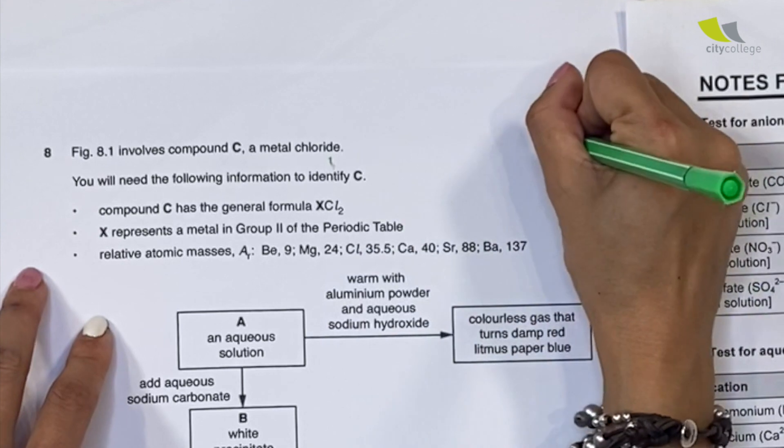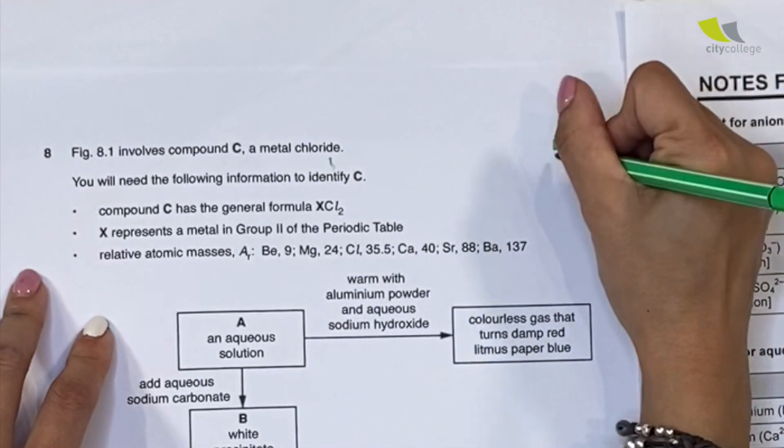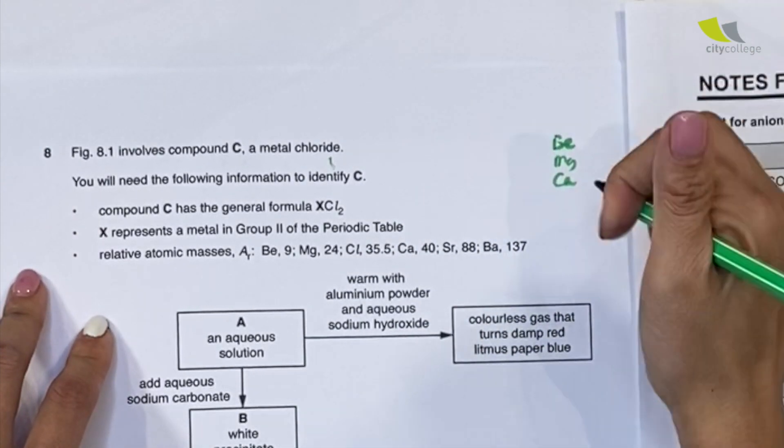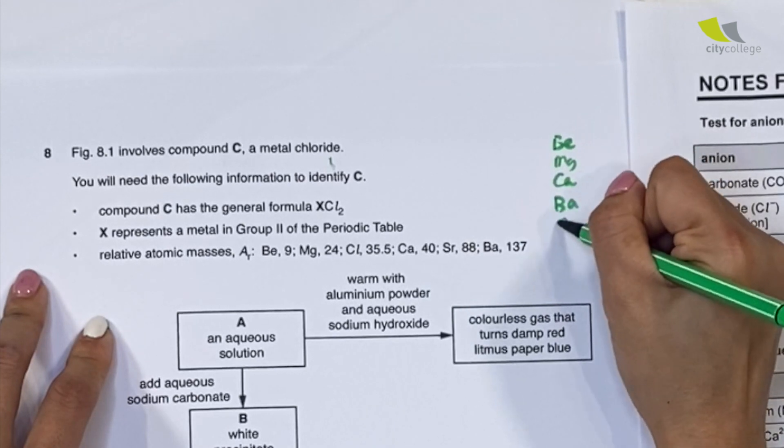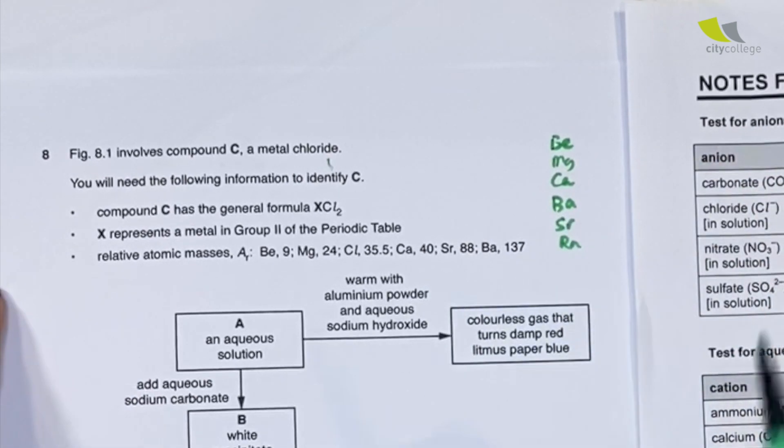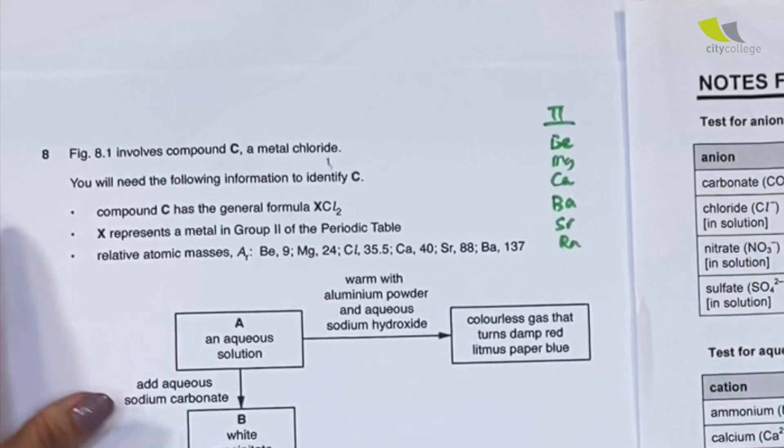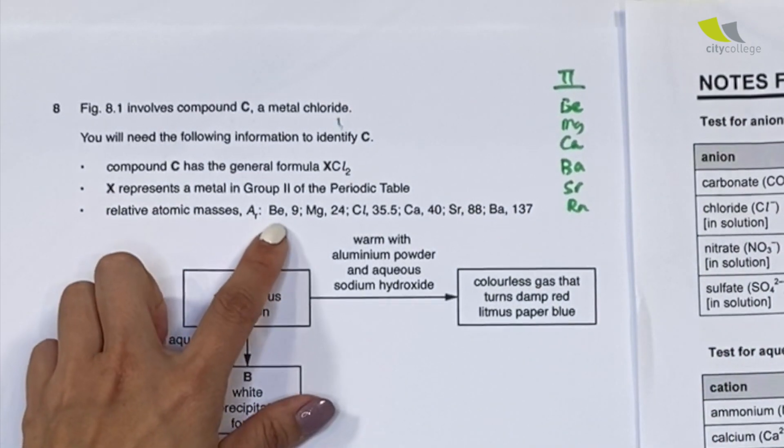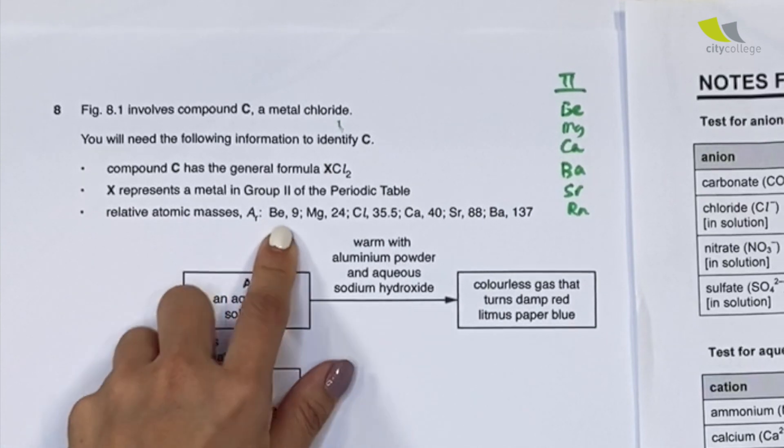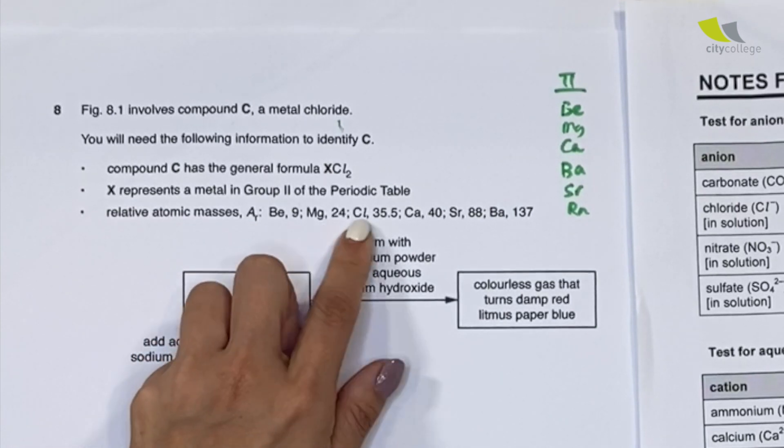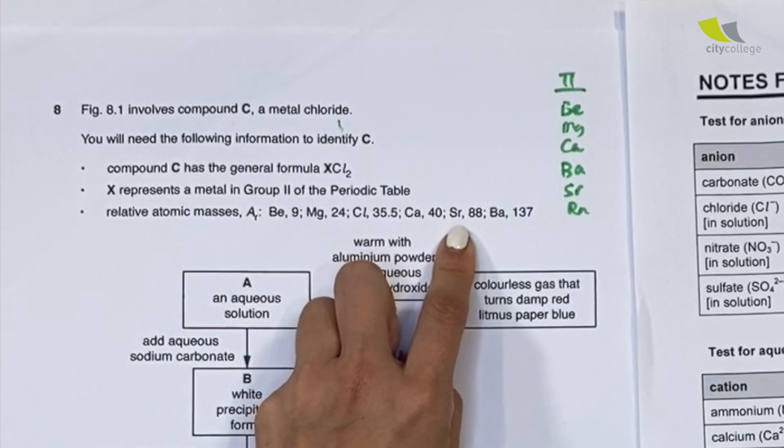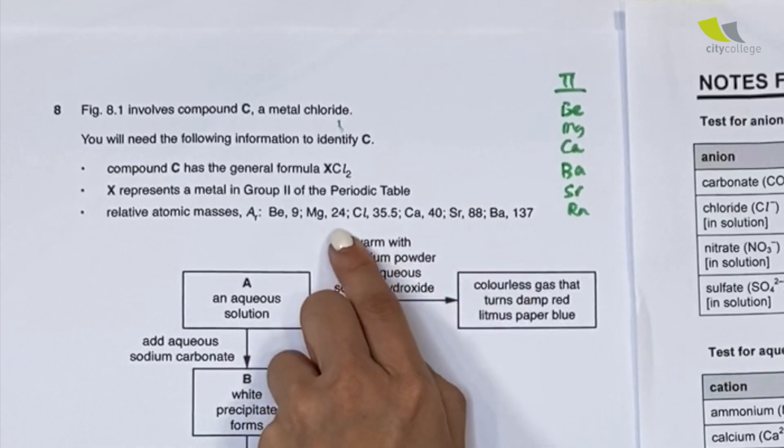Under Group 2 of the periodic table, you have a list of elements: beryllium, magnesium, calcium, barium, strontium, and radium. These are the elements in Group 2. They give you the relative atomic masses: Ar for Be, Mg, Cl, Ca, Sr, and Ba.